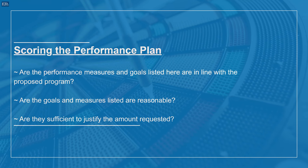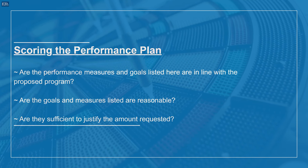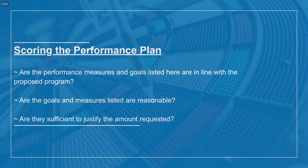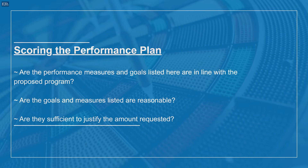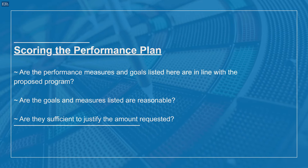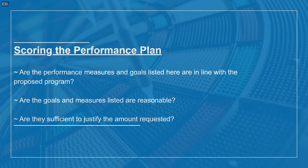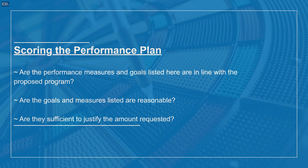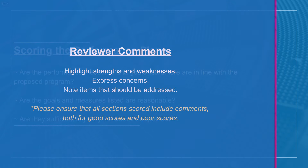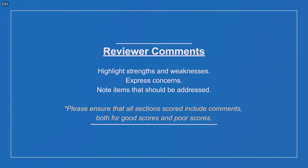Scoring the performance plan. Are the performance measures and goals listed in line with the proposed program? Are the goals and measures listed reasonable? Are they sufficient to justify the amount requested? Reviewer comments should highlight strengths and weaknesses, express concerns, and note items that should be addressed. Please ensure that all sections scored include comments, both for good scores and poor scores.